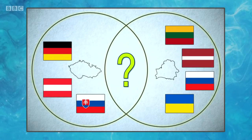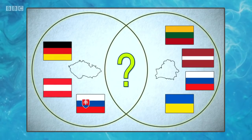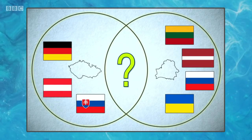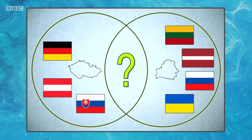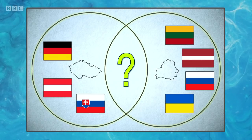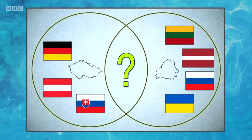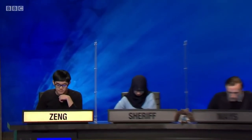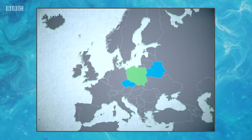We're going to take a picture round. For your picture starter, you're going to see a Venn diagram representing the land borders of two countries. The countries themselves are shown in outline and their neighbours are represented by flags. The two countries have one neighbour in common — name that connecting country. The answer buzzed in is Poland. Poland is correct — the Czech Republic and Belarus share Poland as a neighbour.